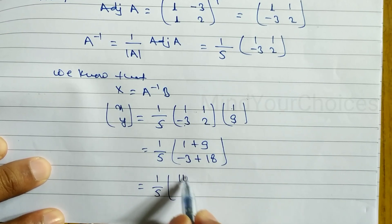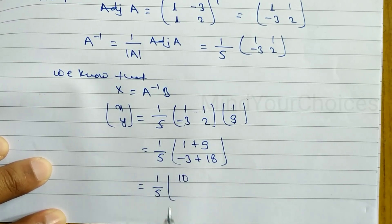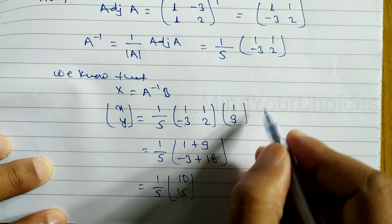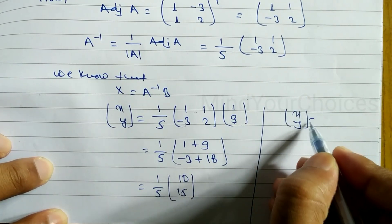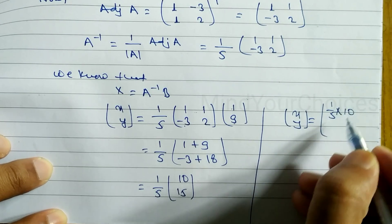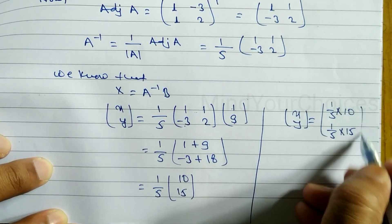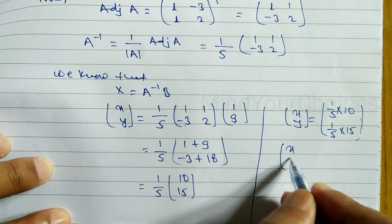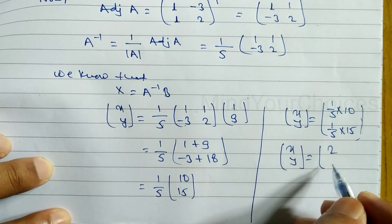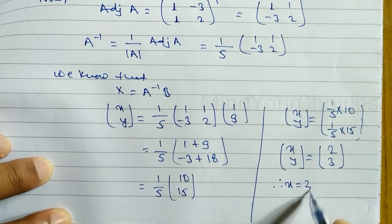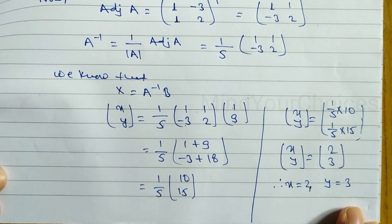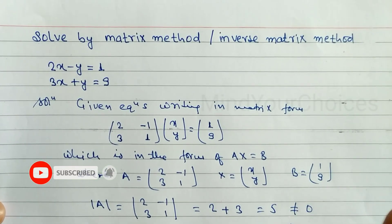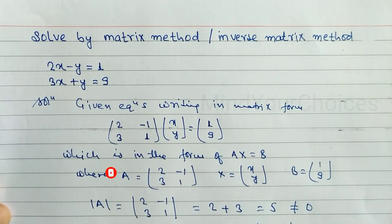So we have (1/5) × [10; 15], since -3 plus 18 equals 15. Therefore [x; y] equals [(1/5)×10; (1/5)×15] which gives [2; 3]. Therefore x equals 2 and y equals 3 is the answer. Hope you understand this video on how to solve linear equations using the matrix method or inverse matrix method, which is very important for class 10 as well as class 11 and 12.